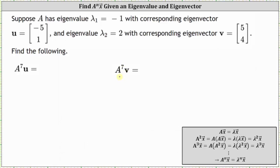Having an eigenvalue and the corresponding eigenvector for a given matrix makes it very easy to find powers of the matrix times the eigenvectors. Looking at our notes below, if we have an eigenvalue and the corresponding eigenvector, then matrix A to the power of N times the eigenvector is equal to lambda, the eigenvalue raised to the power of N times the eigenvector.